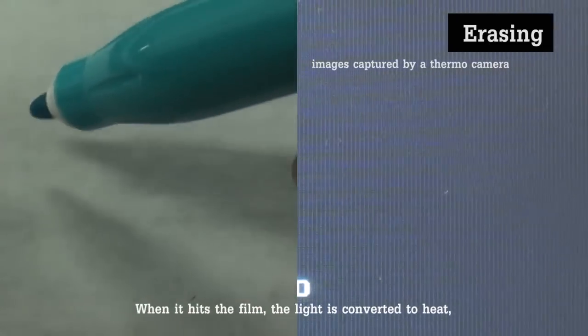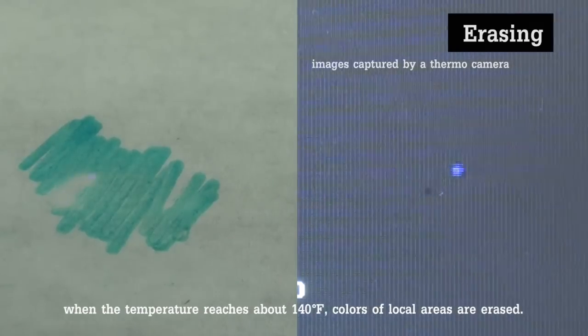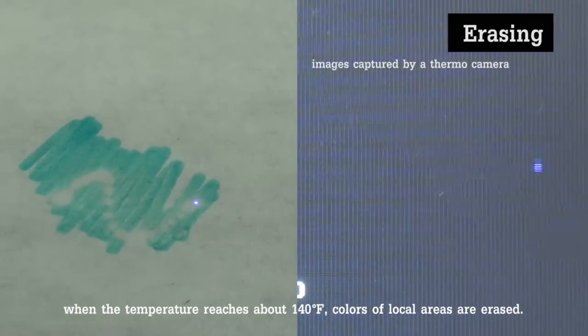When it hits the film, the light is converted to heat. When the temperature reaches about 140 degrees Fahrenheit, colors of local areas are erased.